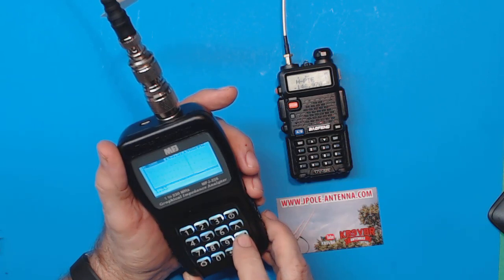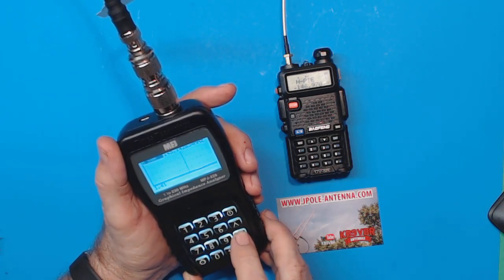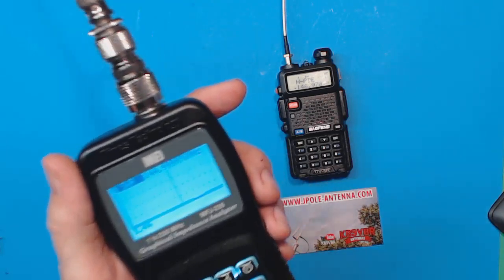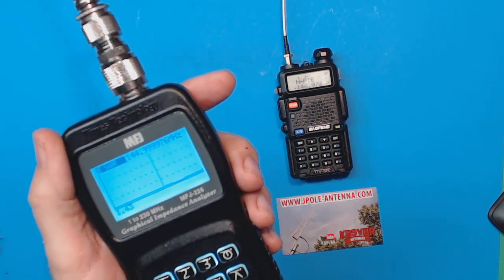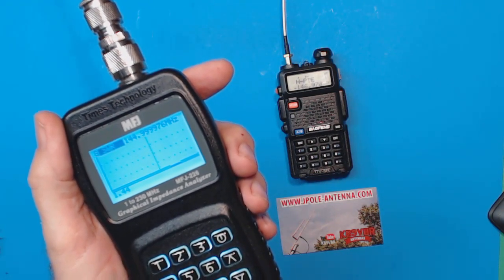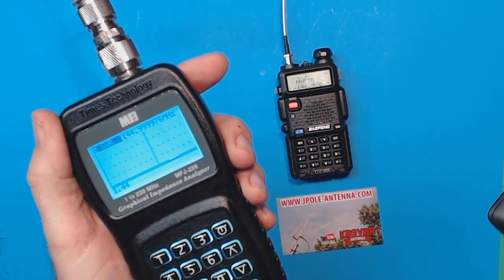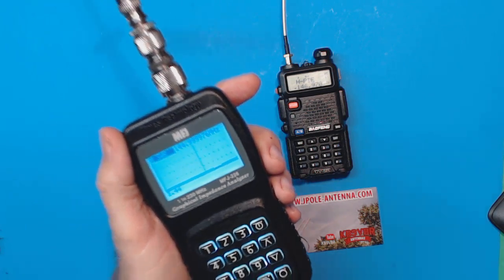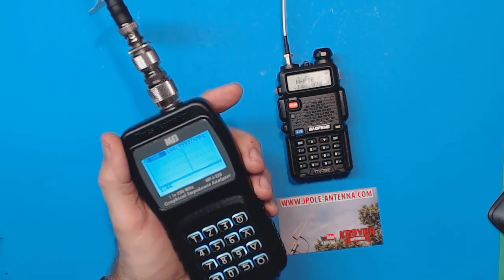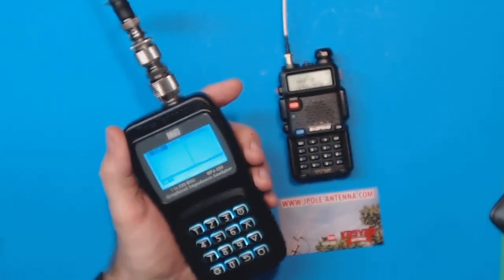Then I can adjust the frequency. Let's go to approximately 145. Okay, there's 144.999999 and the SWR is 1.43. Excellent SWR. As far as the SWR, this antenna is tuned properly. Now my analyzer will only go up to 230 megahertz, so I can't check the SWR at 70 centimeters.